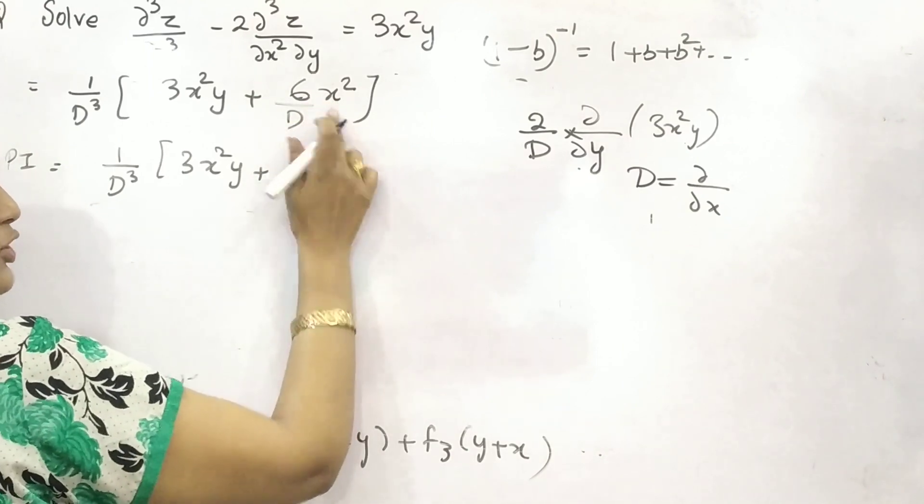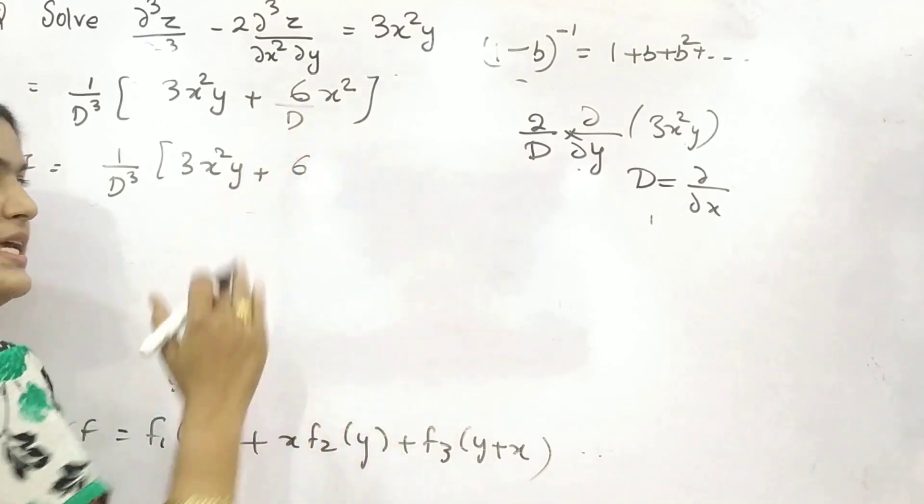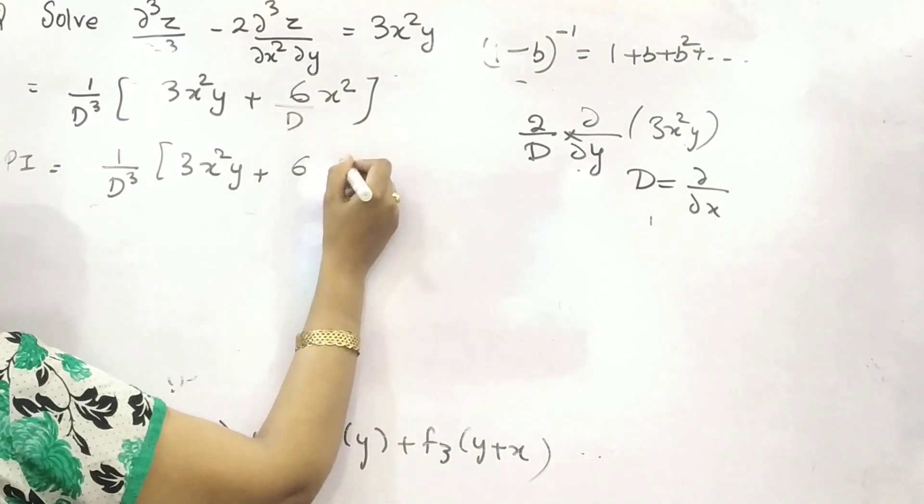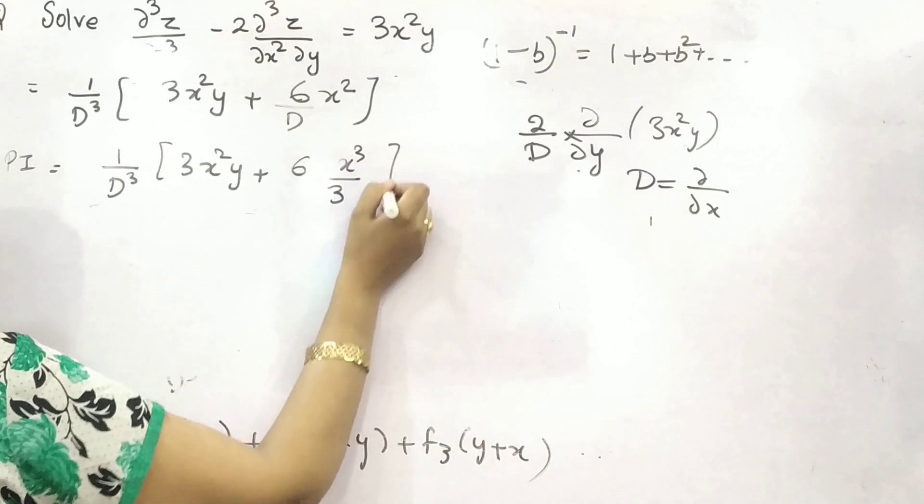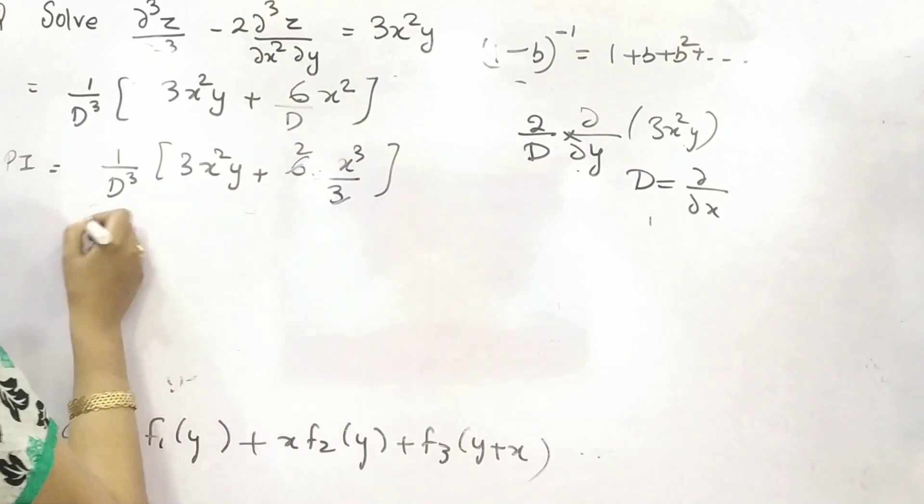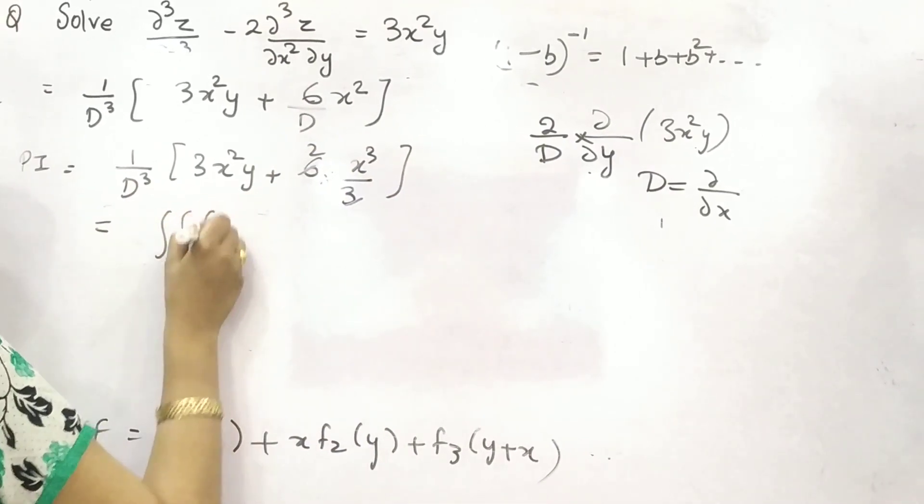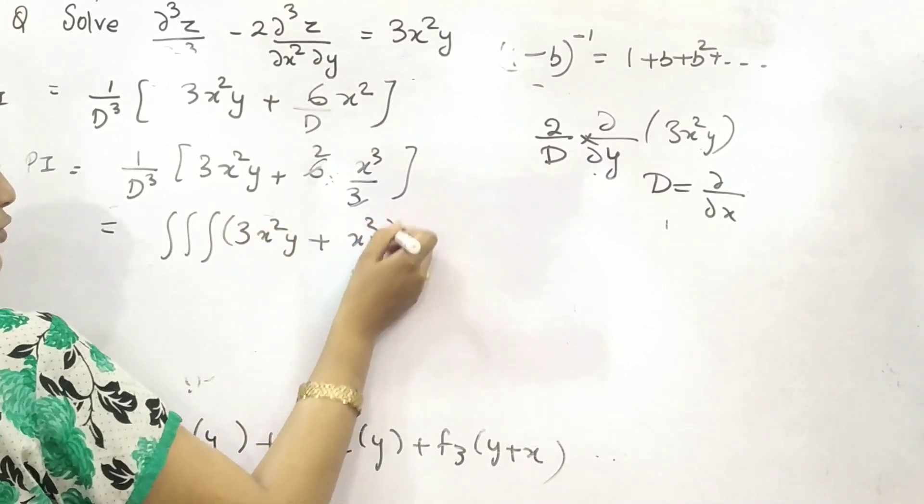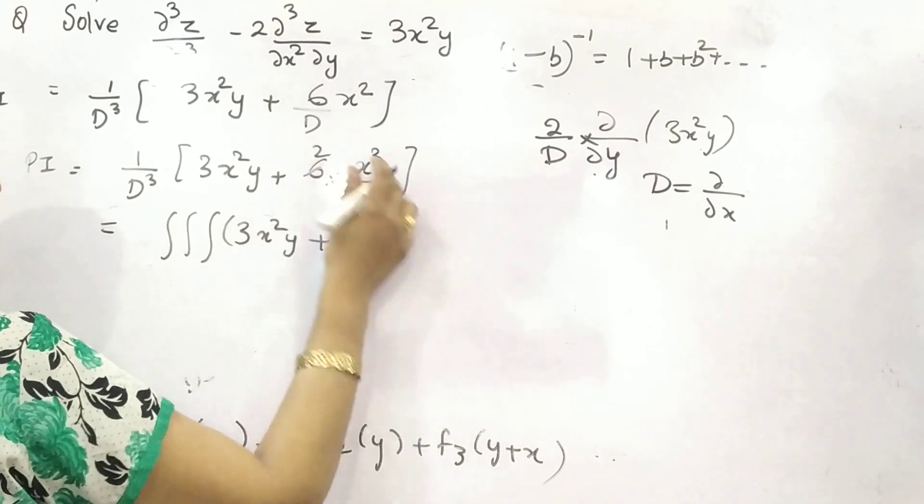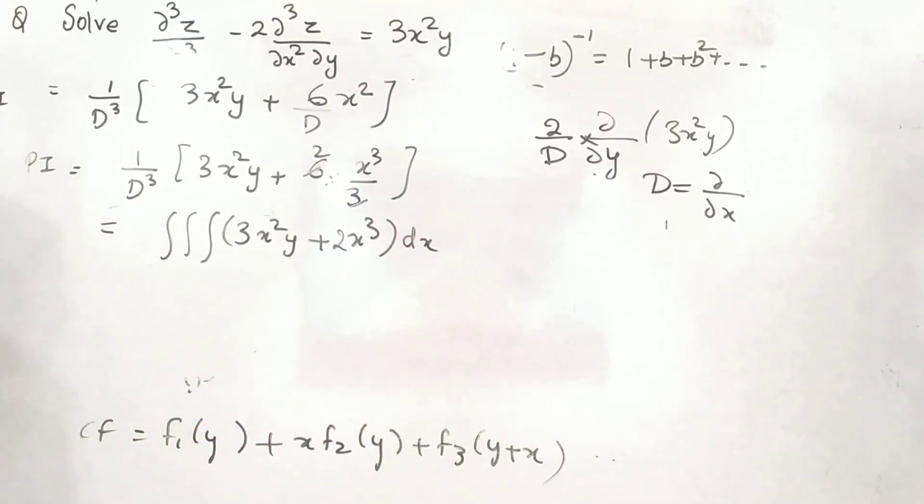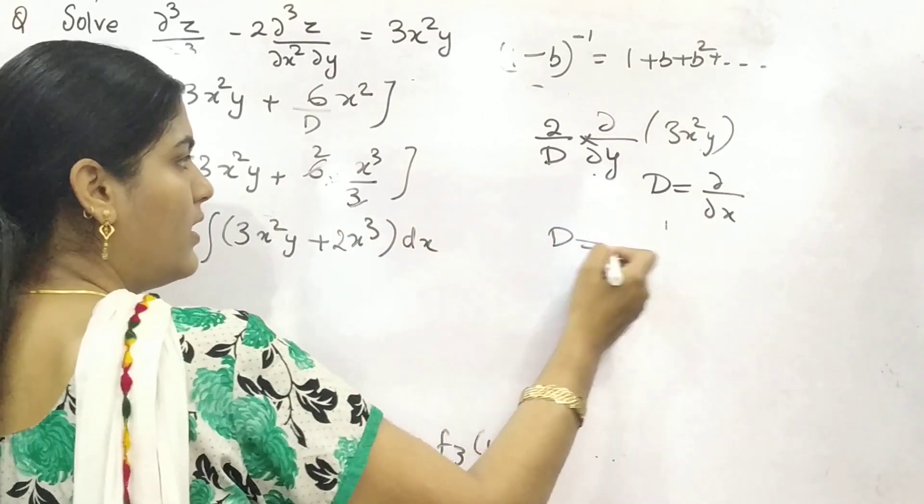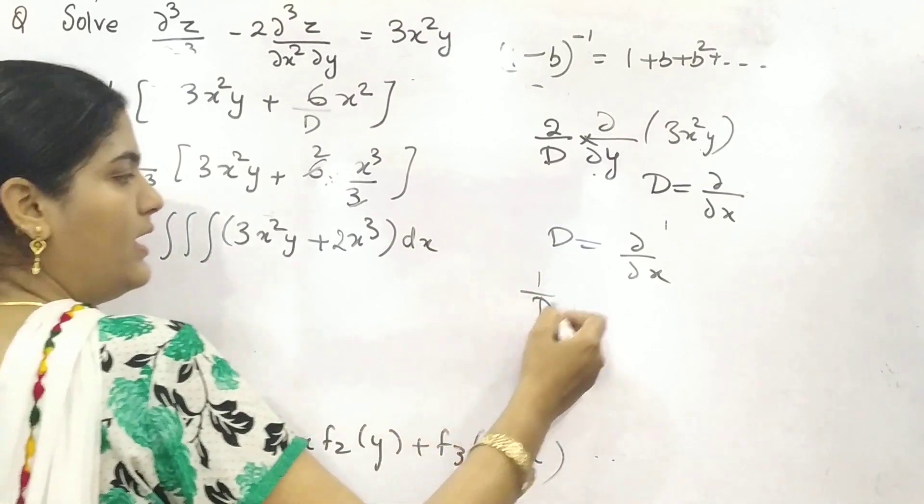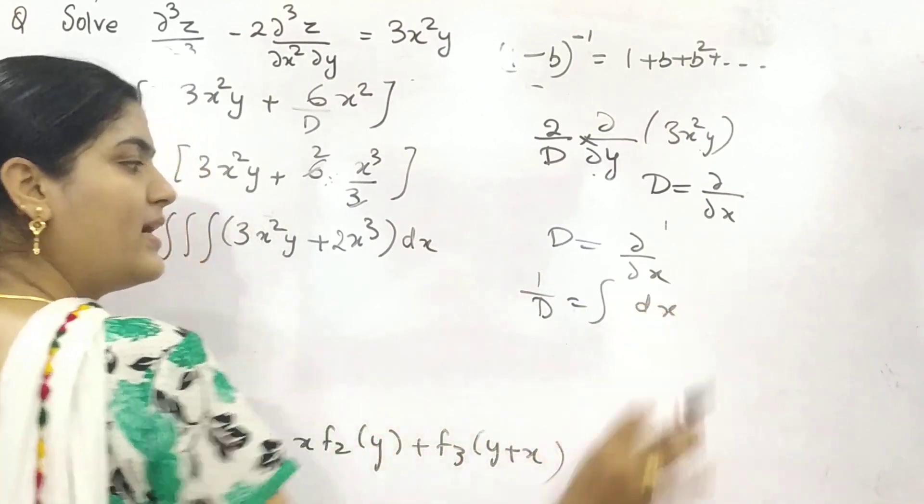If you take integration of x², because 1/d is integral, anti-derivative. So, integrate with respect to x. What will you get? x³/3. So, 3 times 2 is 6. Now, this means triple integral of 3x²y and x³, 2x³. And you are doing it with respect to x. Why? Because your d operator is for partial differentiation with respect to x. So, 1/d will be integral with respect to x.